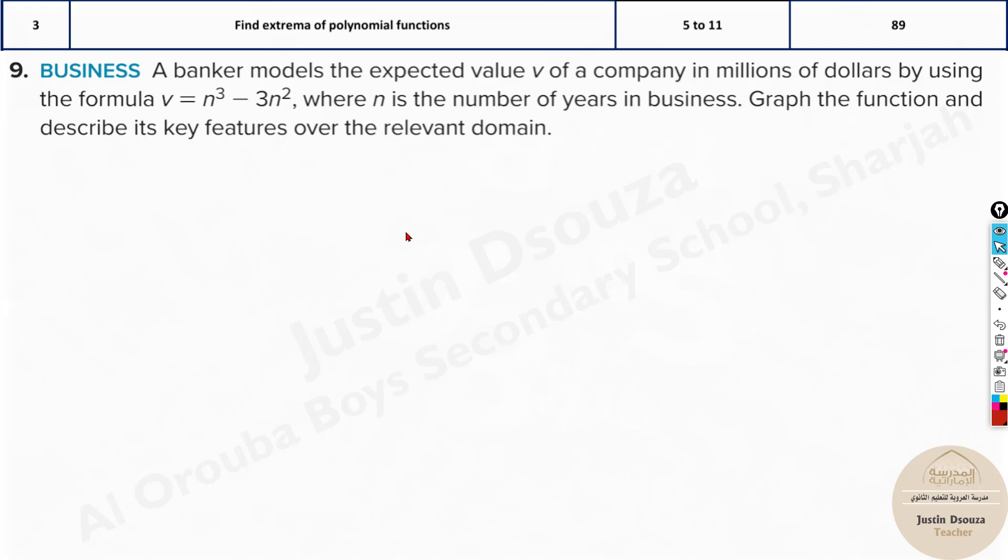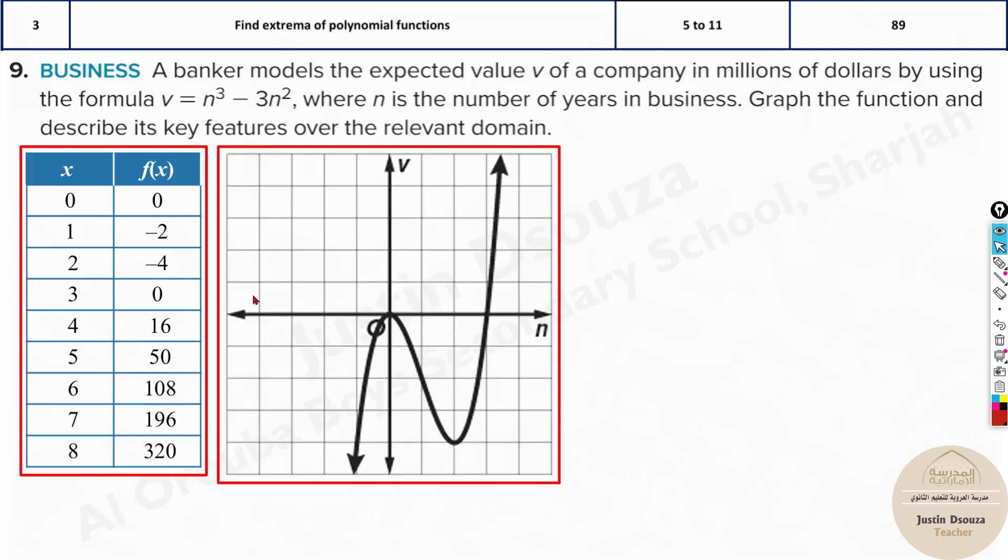And over here we have a real world problem. A banker models the expected value V of a company in millions of dollars by using this formula here, where n is the number of years in business. Graph the function, describes key features over the relevant domain. Now here you just have to put this in the calculator, get the values, graph it out. Now here they want you to know which is the relevant domain.